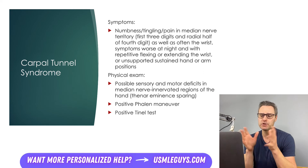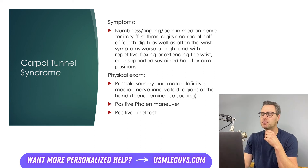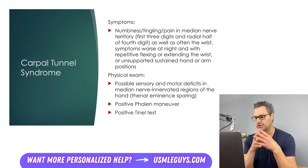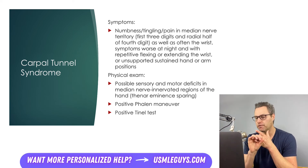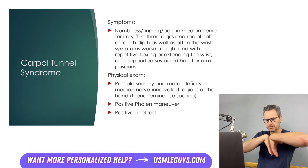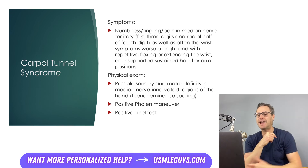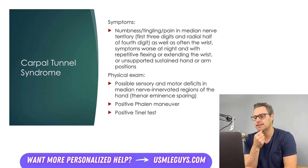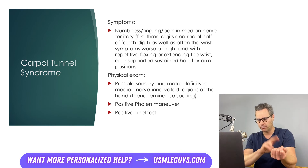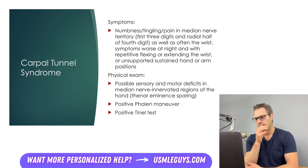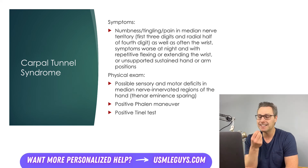On physical exam, we have a few tests to support the diagnosis of carpal tunnel. The Phalen maneuver involves having the patient fully flex their wrist by pressing the dorsal surfaces of the hands together for one minute — if symptoms of pain, numbness, or tingling arise, the test is positive. The Tinel test involves tapping the wrist over the area where the nerve travels; if this elicits tingling or numbness, it is a supportive finding.